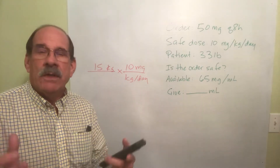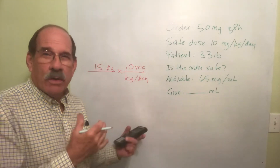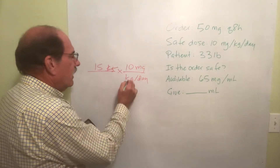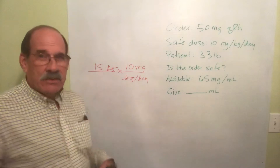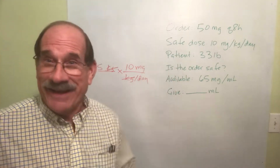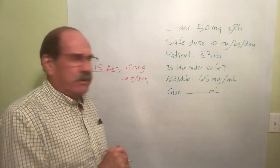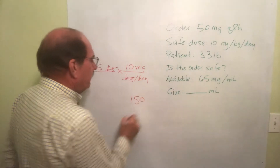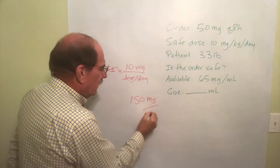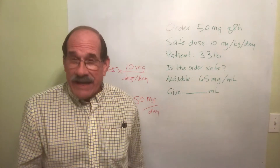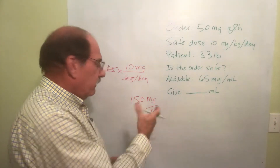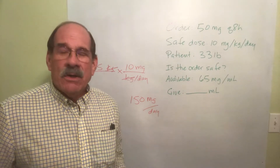Keep track of your words by canceling units. Kilograms on top cancels kilograms on the bottom. So 15 times 10 is 150. What's left? Milligrams per day. So in a whole day, you can safely give your patient 150 milligrams.